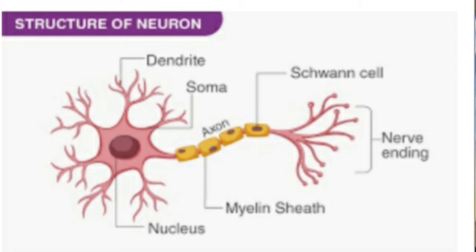The third part is the axon, which is a long process arising from the cytone. It may be microscopic to 1 meter in length. The axon carries impulses away from the cytone, hence called efferent processes. An axon of a neuron covered by one or two sheaths is called a nerve fiber.